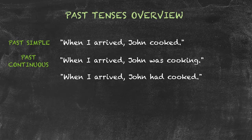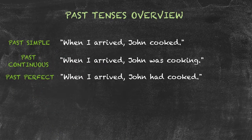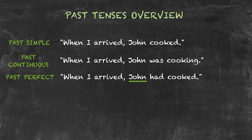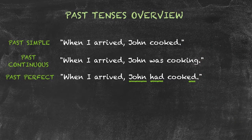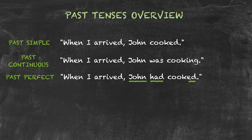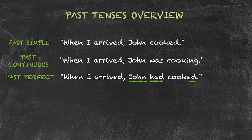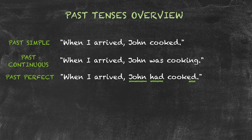In the third example, when I arrived, John had cooked. John had cooked is the past perfect tense. This has the structure: subject, here John, plus had, plus past participle, here cooked. Past perfect is used to express the past in the past. In other words, an action that happened before another past action. When I arrived, John had cooked. I arrived in the past, and I want to say what happened before that past time. So I have to use the past perfect.